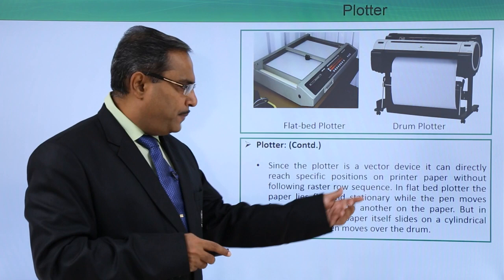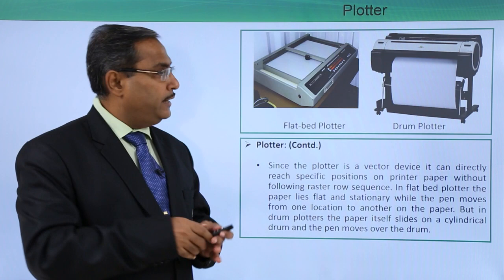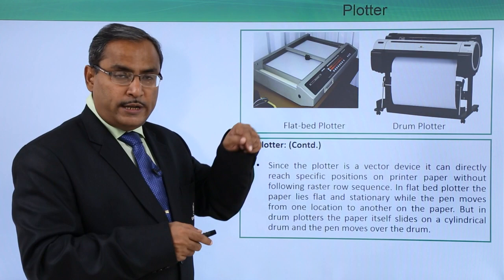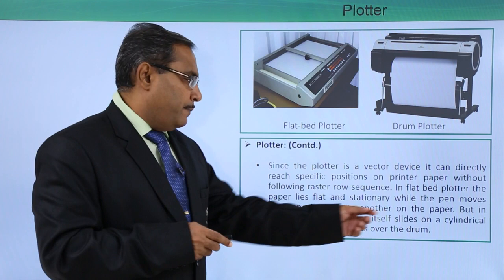In a flat bed plotter the paper lies flat and stationary while the pen moves from one location to another. The paper will remain stationary and will not move — only the pens will be moving along with the carriage. This is the carriage, and there is a pen holder which holds the pen. The carriage moves in one direction and the pen holder moves in the other direction, so it can access any part of the paper.